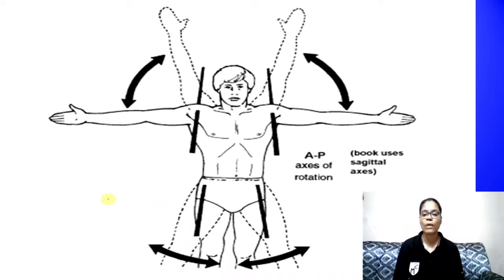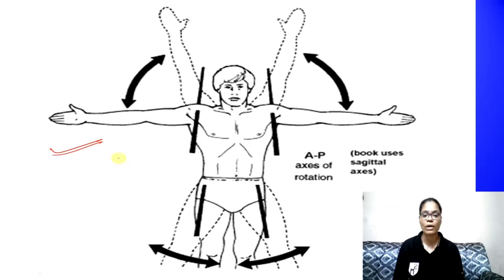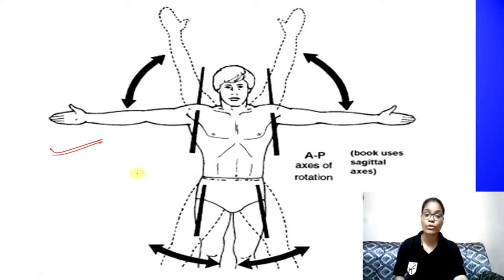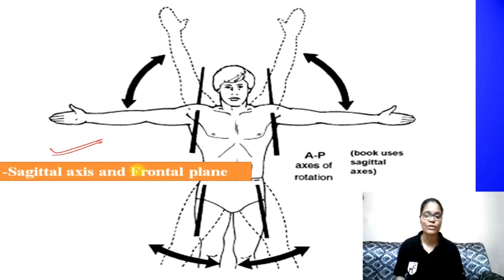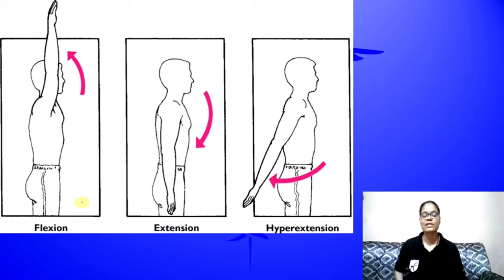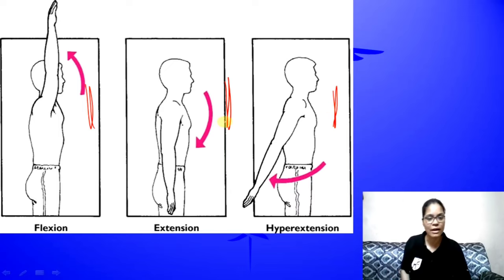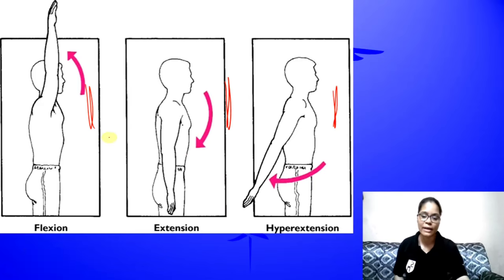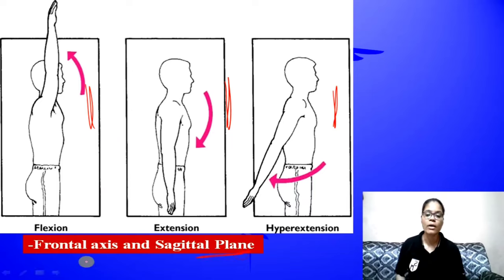Suppose your hand and leg movements are adduction and abduction. Which view will you see them in? Frontal view. So it is the Frontal plane and Sagittal axis. If you talk about flexion, extension, and hyperextension, if you are standing in front of a human performing flexion-extension, you will see it from the side. So if it shows in the side view, it becomes the Sagittal plane and Frontal axis.